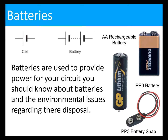Batteries are often used to provide power for your circuit. You should know about batteries and also the environmental issues regarding their disposal. Common types shown here include AA, PP3, and of course a PP3 battery snap.